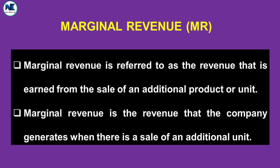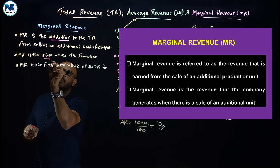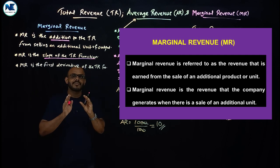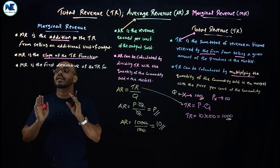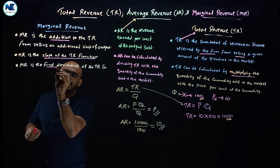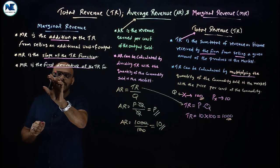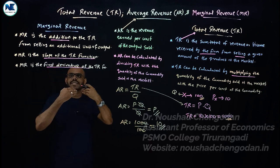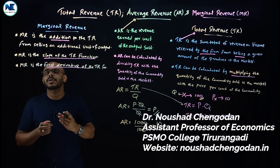Listen very carefully: marginal revenue is the slope of the total revenue function. The slope of the total revenue function gives us marginal revenue. That is, marginal revenue is the first derivative of the total revenue function — when you differentiate the total revenue function, you get marginal revenue.